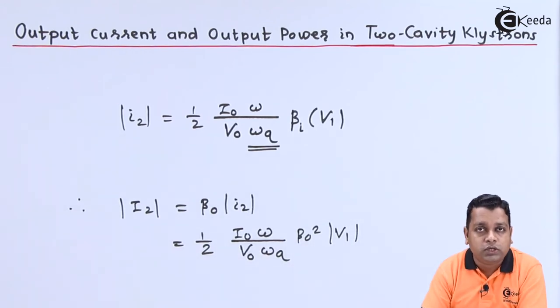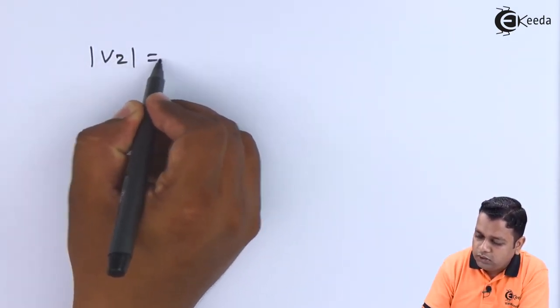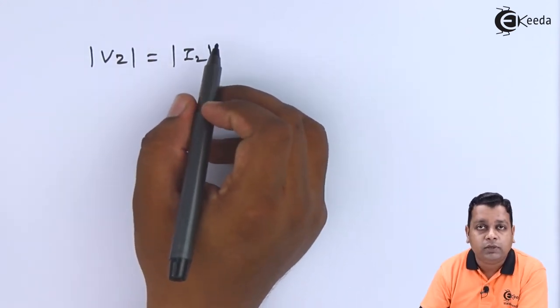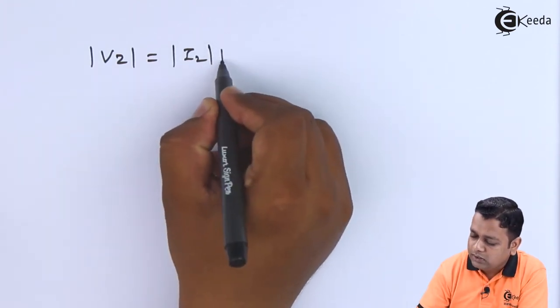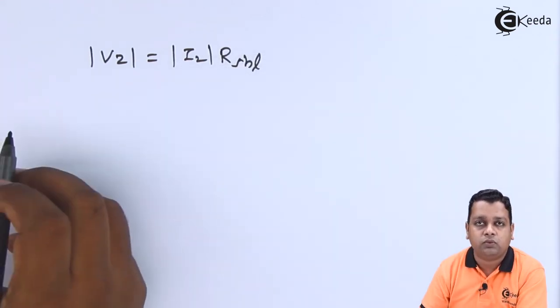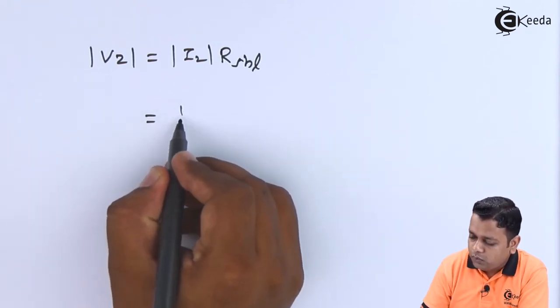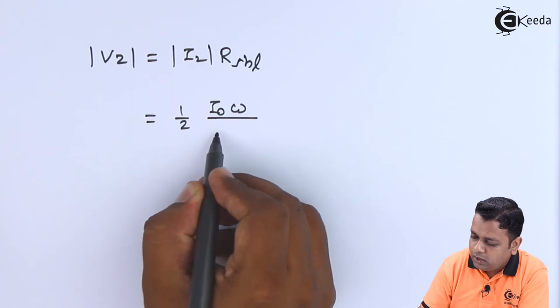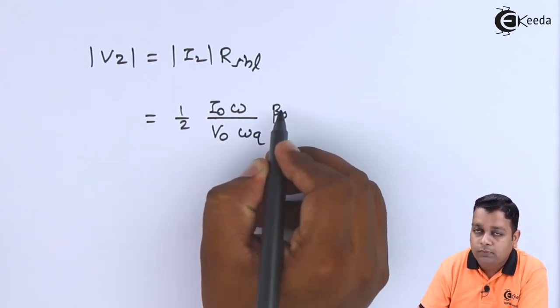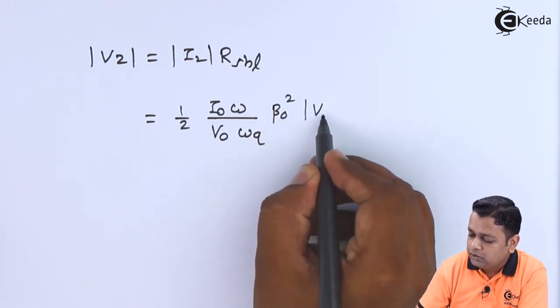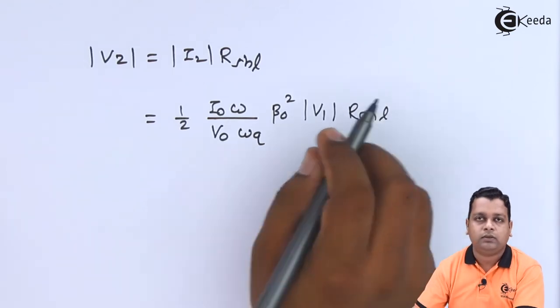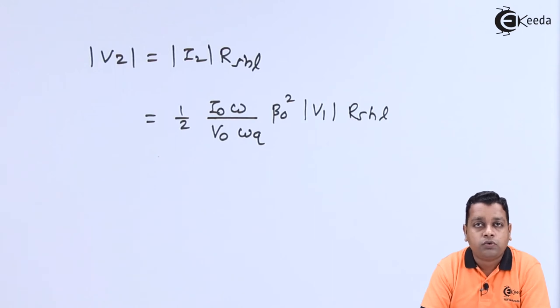Similarly, the induced voltage into the output cavity can be given by mod of V2. So mod V2 will be written as mod I2 from the previous equation in multiplication to the effective shunt resistance denoted as R_SHL here considering the load. The formula will be 1/2 I0 omega divided by V0 omega_Q, the beam coupling coefficient for the output cavity squared in multiplication to mod of V1 into R_SHL. This effective shunt resistance is including the external loading as well.